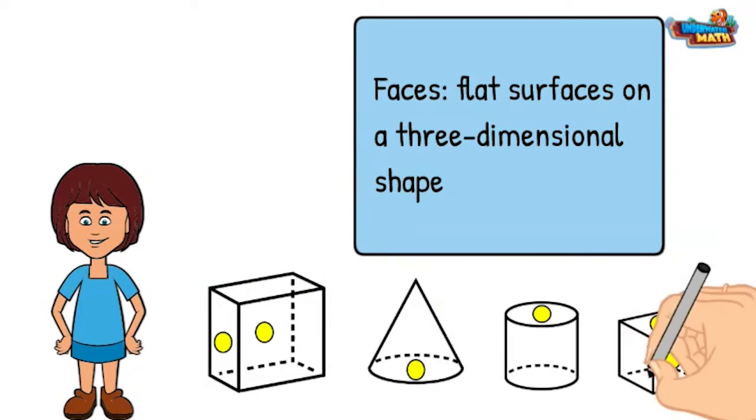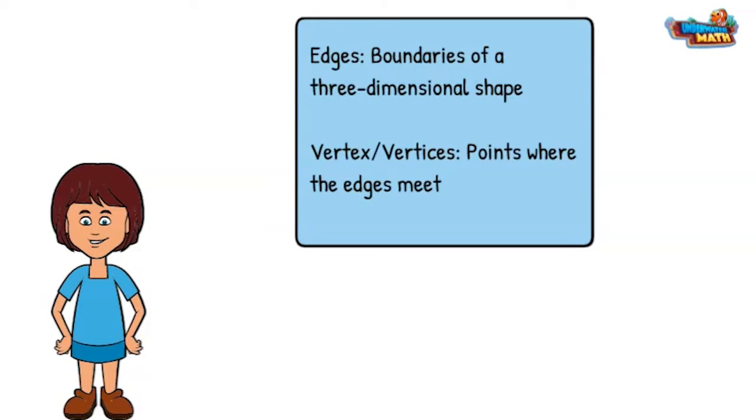The yellow dots represent some of the faces on the various three-dimensional shapes. Three-dimensional shapes also have edges. These are the boundaries of a three-dimensional shape and most often are straight.